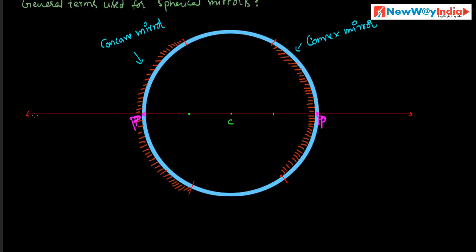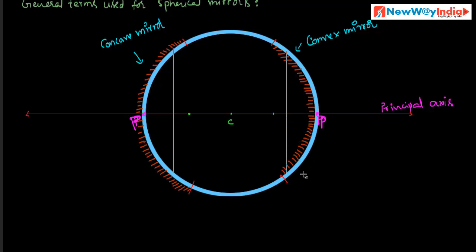Next, principal axis. This is an imaginary line that passes through the pole of the spherical mirror and the center of curvature. It is called the principal axis. Next, linear aperture — the diameter of the spherical mirror is called linear aperture. It is denoted by AB.